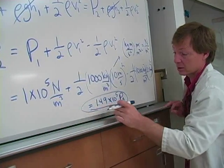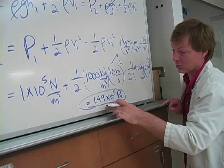1 times 10 to the fifth, that's about an atmosphere. 1.49, that's about 1 and a half atmospheres.